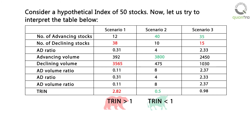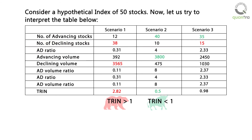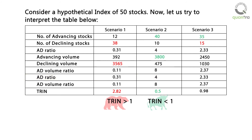Similarly, when TRIN is below 1, it indicates a bullish sentiment. This happens because the number of advancing stocks are more than the number of declining stocks, which means the AD ratio is greater than 1. And rationally, this indicates a far greater volume traded in advancing stocks than declining stocks. As a result, the AD volume ratio will be greater than the AD stock ratio, resulting in a TRIN less than 1.